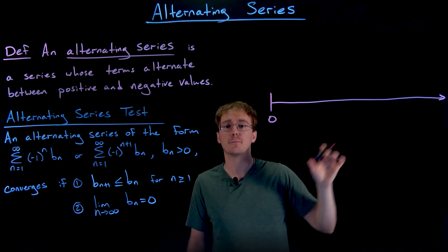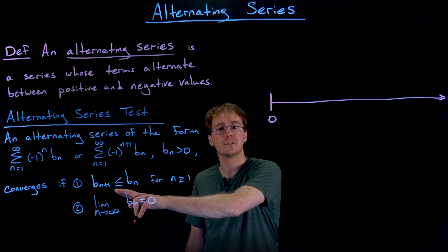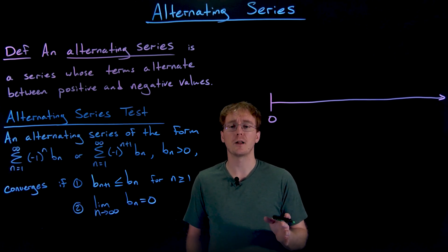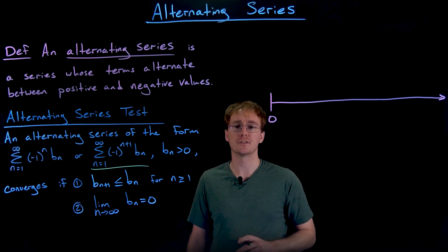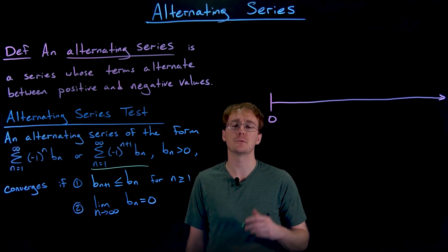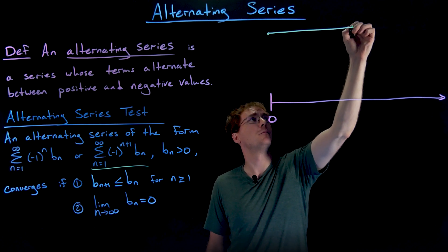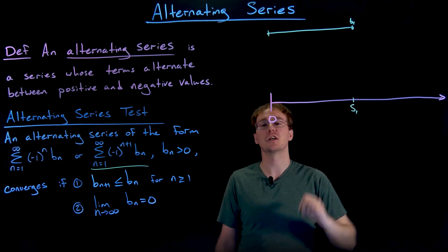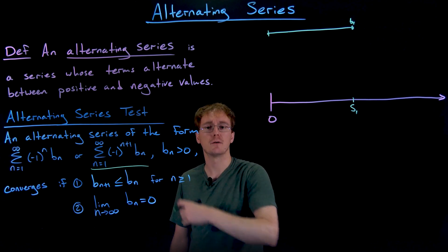To start, I'll graph a number line with zero at the left, and on this number line we'll plot the partial sums of our alternating series, assuming the terms are decreasing in size and approaching zero. We'll work with an alternating series of the form the sum from n equals one to infinity of negative one to the n plus one times b sub n, so our first term is positive. The first partial sum S1 is simply b1, some positive number.